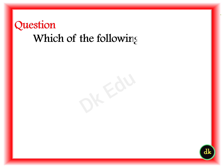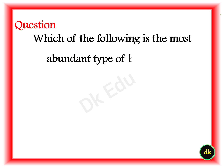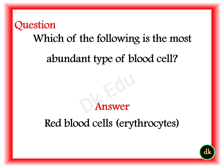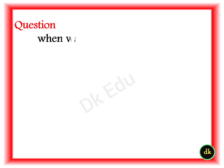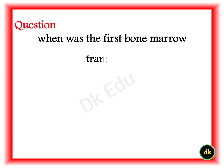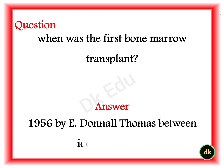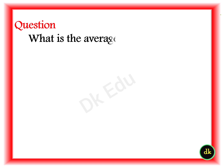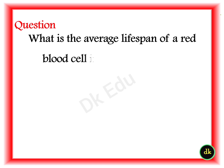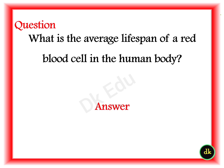Q: Which is the most abundant type of blood cell? A: RBC or erythrocytes. Q: When was the first bone marrow transplant performed? A: 1956 by E. Donald Thomas between identical twins. Q: What is the average lifespan of a red blood cell in the human body? A: 120 days.